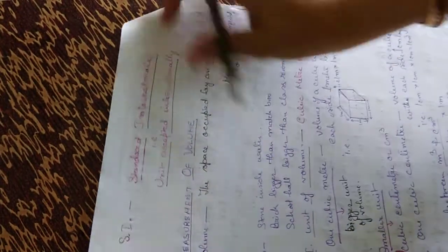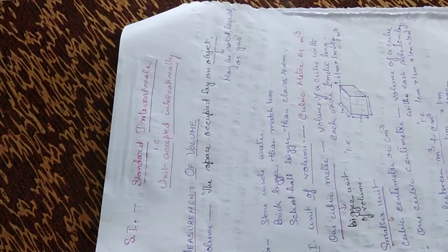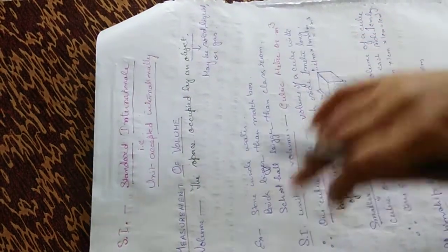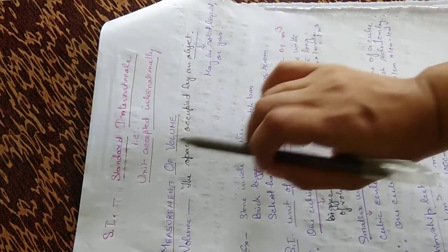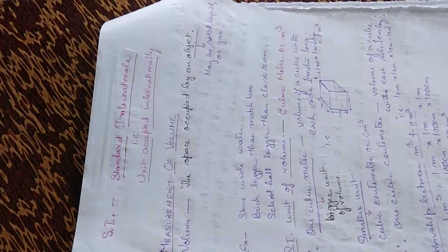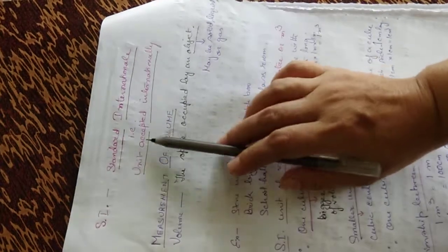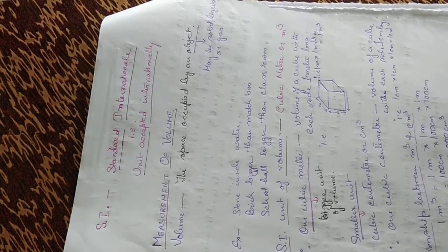Next, we come to what is SI unit. I was talking about SI unit in every definition which I have discussed just now. SI unit is a standard international unit — its full form is Standard International — that is, a unit which is accepted internationally. That is called SI unit.